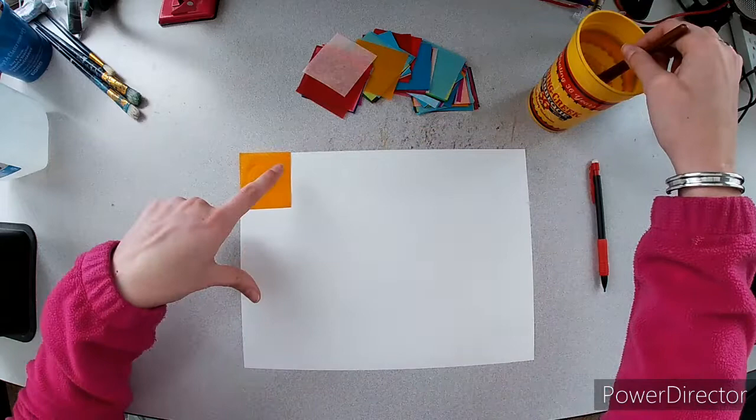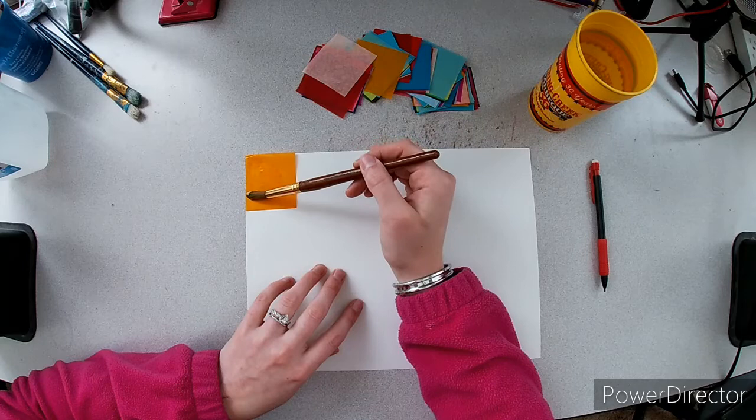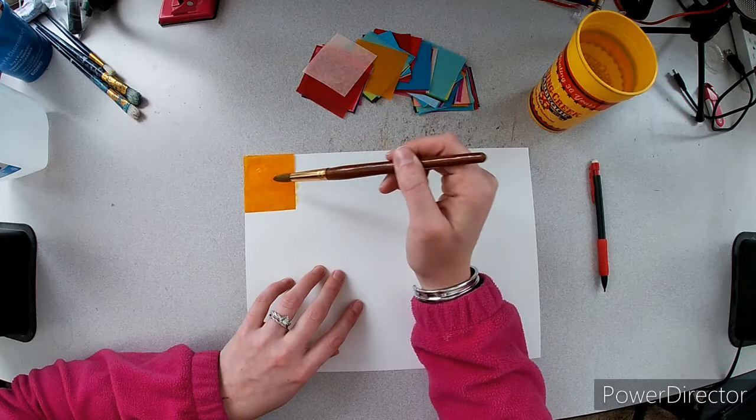Then you want to get the entire square of tissue paper soaking wet. If the tissue paper isn't wet, then the color, the ink that's inside it, won't be able to leave it and go into the painting paper.